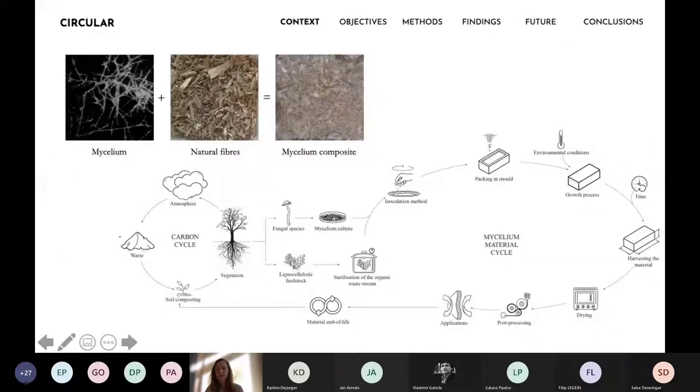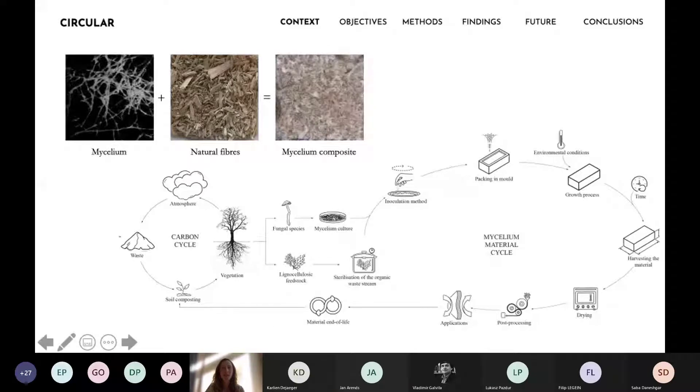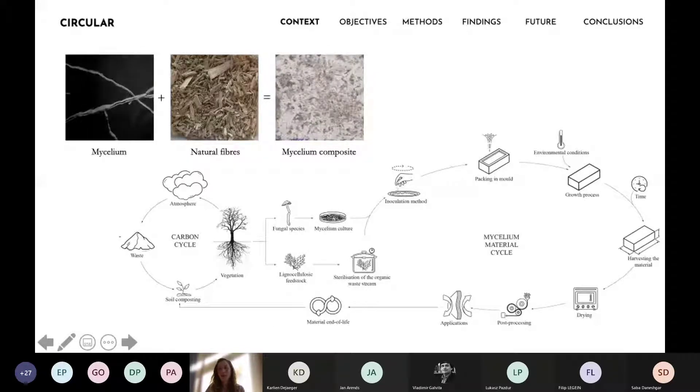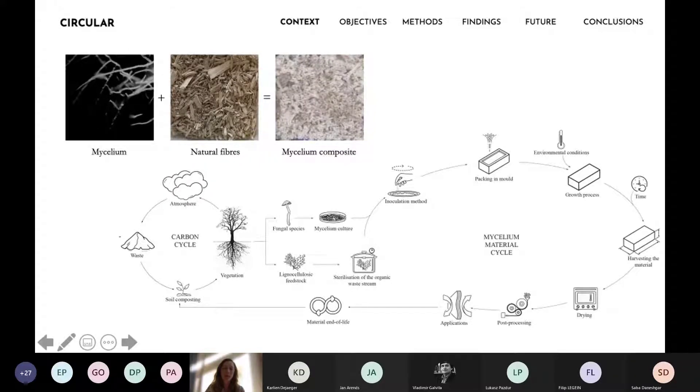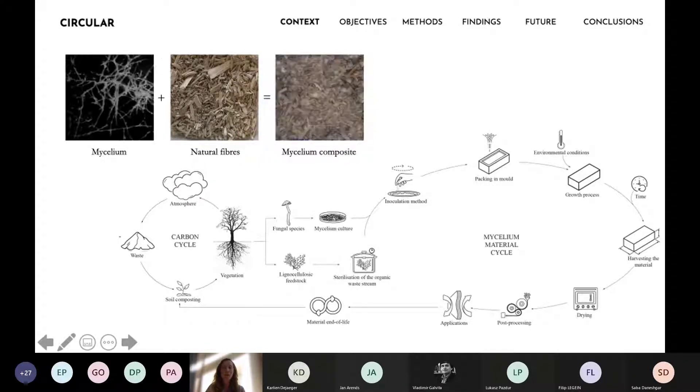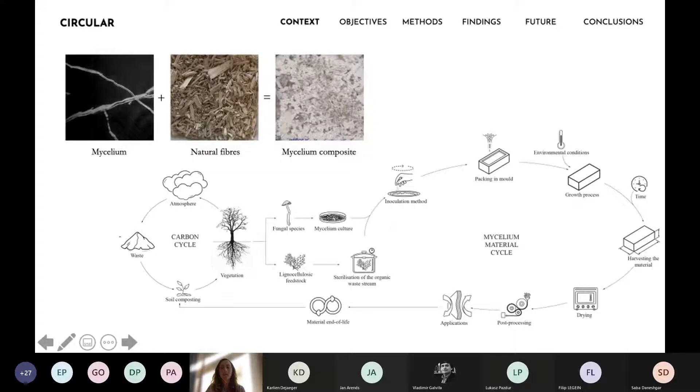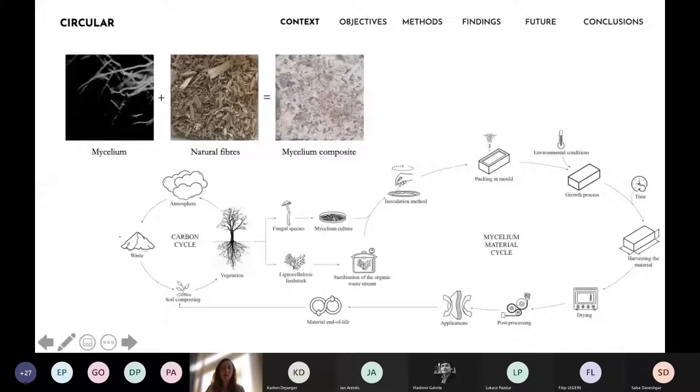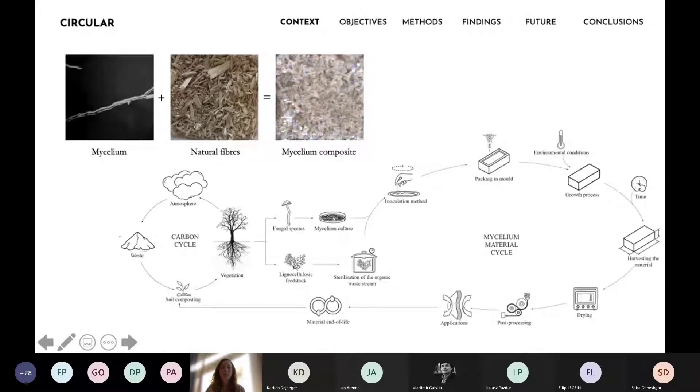Instead of extracting raw resources that would generate future waste, biological materials can be grown based on agricultural residue fibers. In that sense, fungal materials consist of natural fibers which are bound together by mycelium, the root structure of fungi. That way, organic waste streams from the wood or agricultural industries can be valorized while at the same time creating a solid material that is biodegradable at the end of its life cycle.